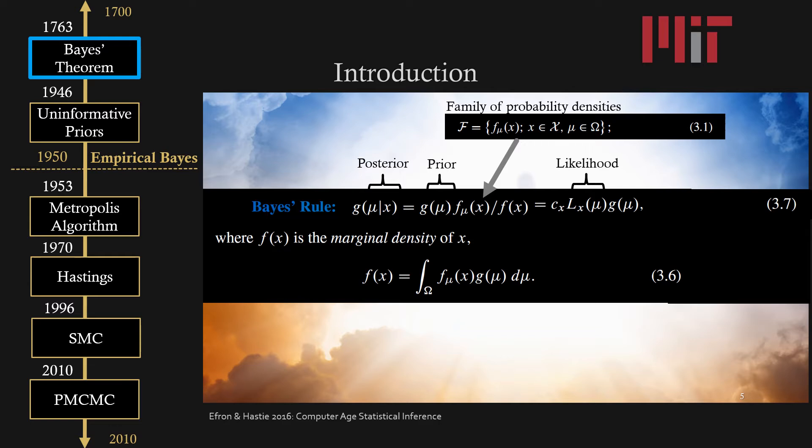Today Bayes' rule looks a little more like this, where you have the posterior which is equal to the prior times the likelihood all divided by the marginal density of x. This would be for a probability density that is determined by a family of probability densities.